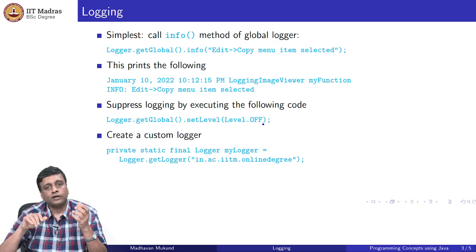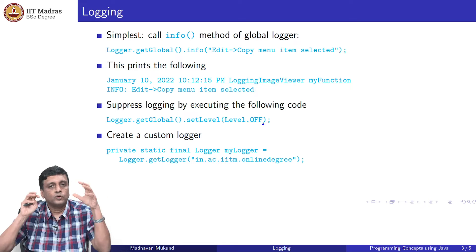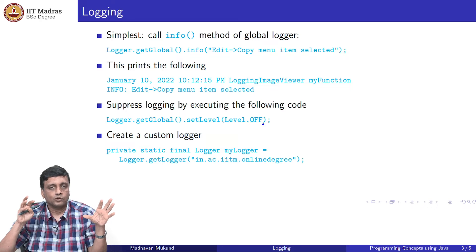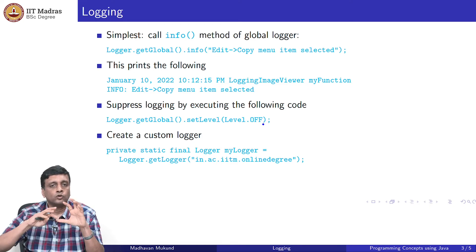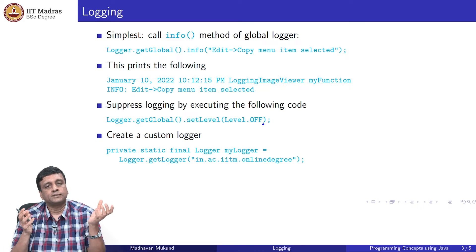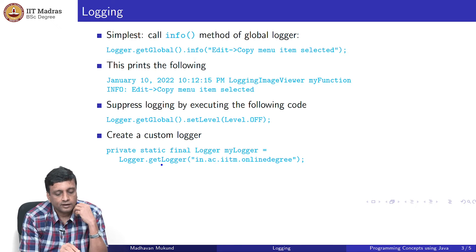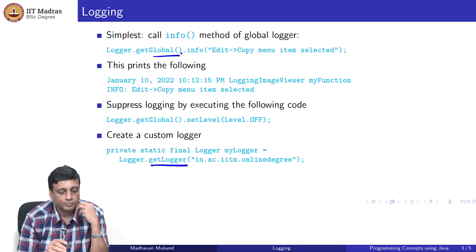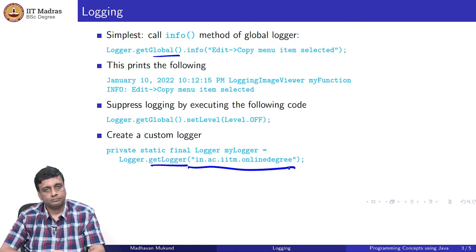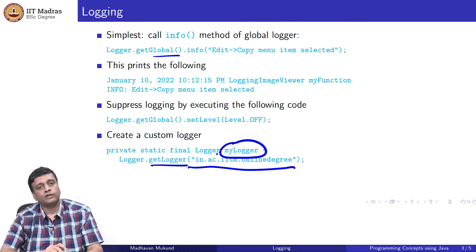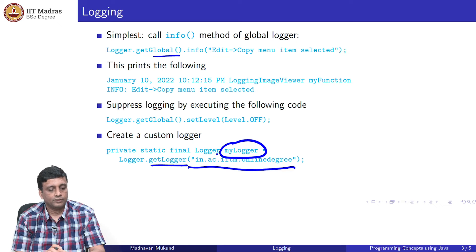More interestingly, you can create different loggers. You may not want all your log messages to sit in the same place; depending on where they came from, you might want to put them in different places. This is a bit like packages, which allow you to organize your code in groups — similarly, you can log your messages in groups. You can create your own logger — not the global logger — but get a logger of your own and provide it a name. This will create a specific logger stored in a variable, and you send information to that variable.